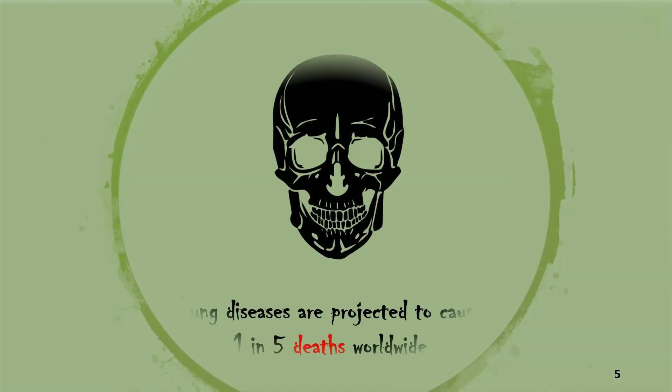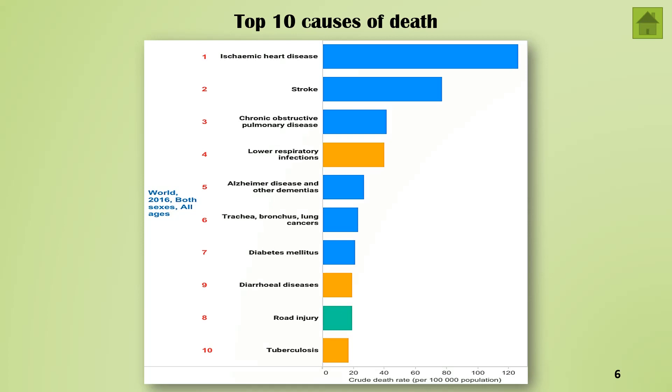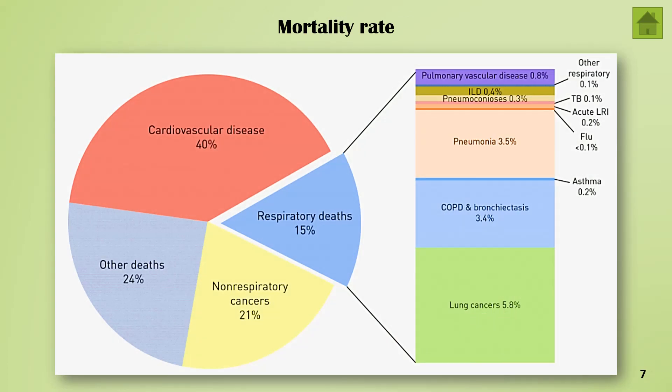According to the survey conducted by World Health Organization in 2016, lung diseases are projected to cause 1 in 5 deaths worldwide. Out of the top 10 most fatal diseases, 4 of them are related to lungs, among which chronic obstructive pulmonary diseases are the third major cause of death worldwide. The overall mortality rate associated with respiratory diseases is around 15%, and almost 10% of the population in Pakistan is suffering from chronic asthma, which shows that medicine needs a lot of advancement for early diagnosis and better treatment to save these precious lives.